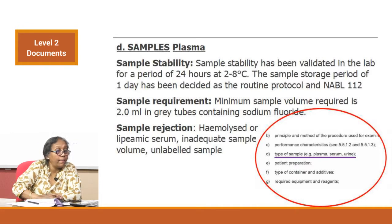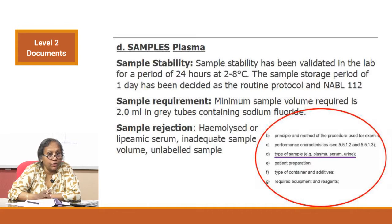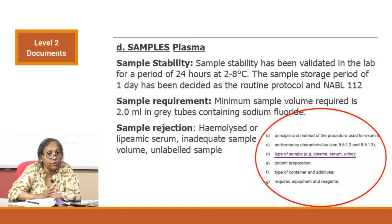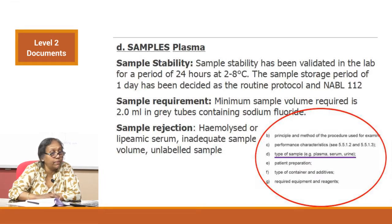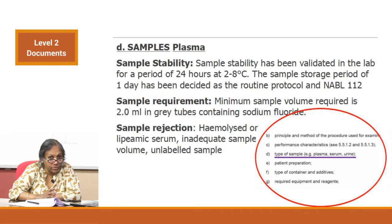Sub-clause D is samples. In this SOP, the sample is described as plasma. If your glucose determination is for serum, write serum; if CSF or urine are included in your testing protocols, write those as well. Whatever samples you are testing should be completely listed here, along with stability — this laboratory states sample stability has been validated in the lab for 24 hours at 2 to 8 degrees centigrade. Sample requirement: minimum 2 ml in gray tubes containing sodium fluoride. Sample rejection criteria — hemolyzed samples, inadequate sample volume — should be described here so the technician knows.